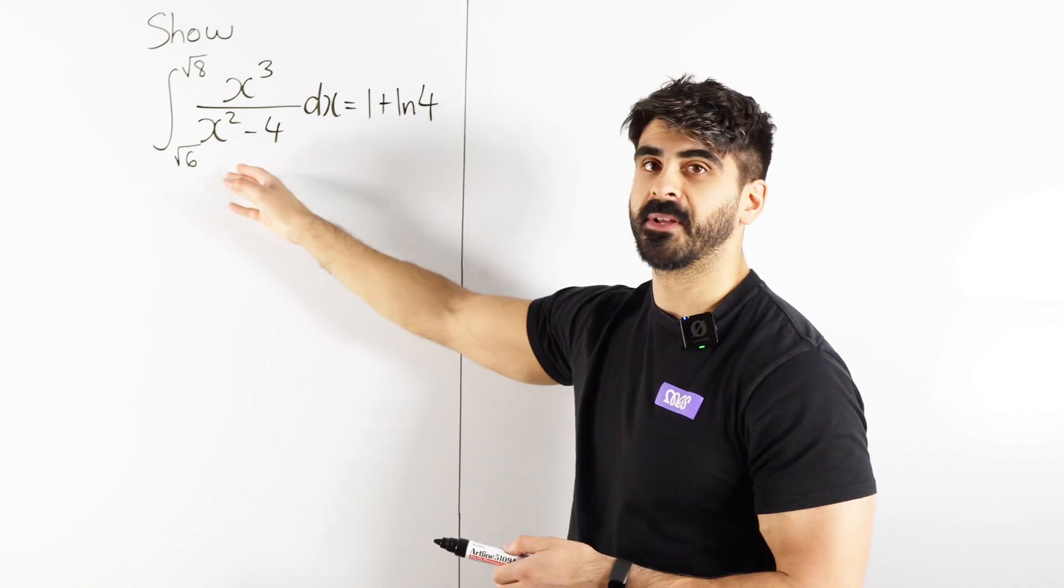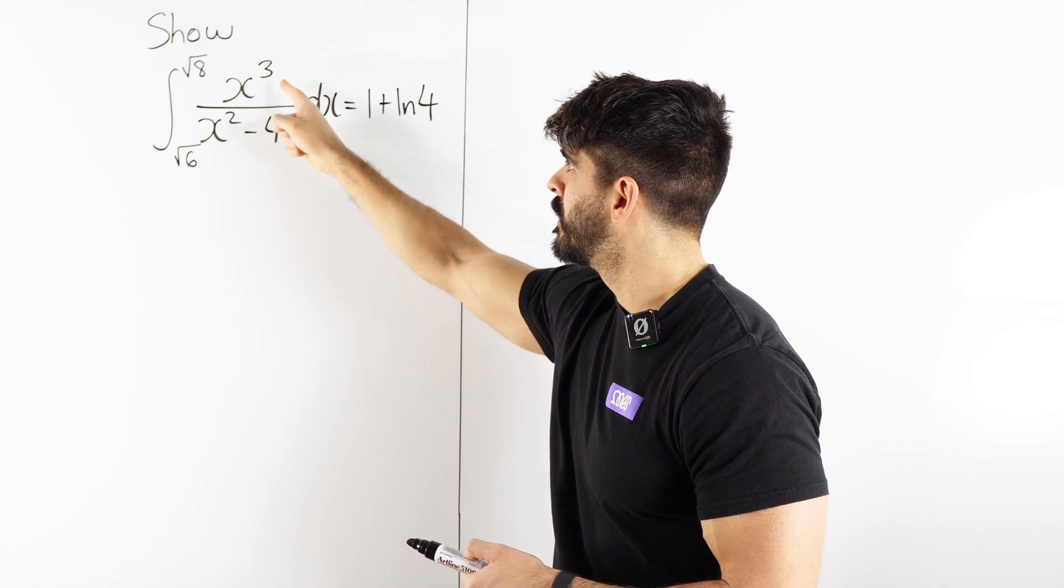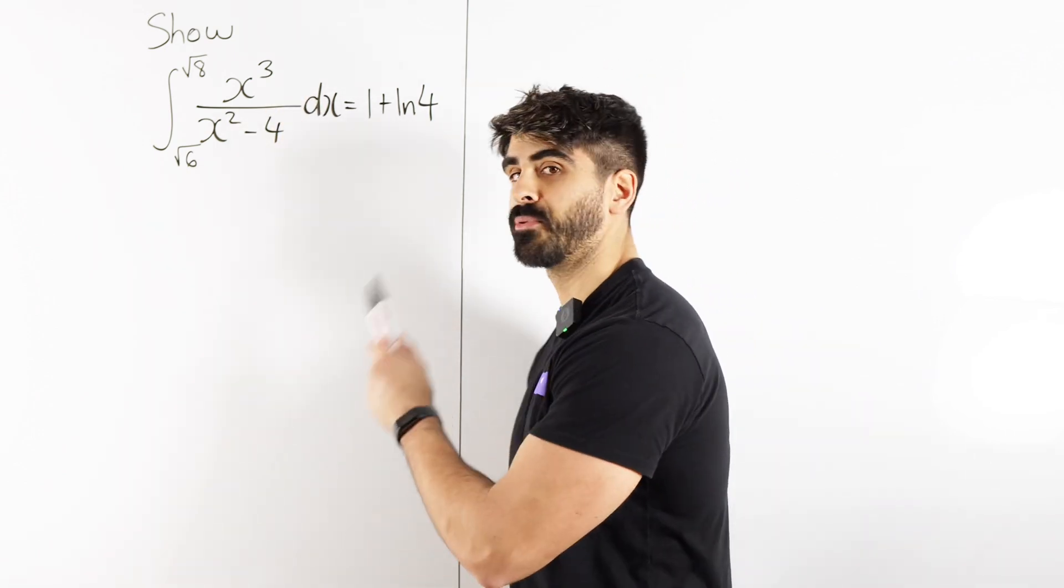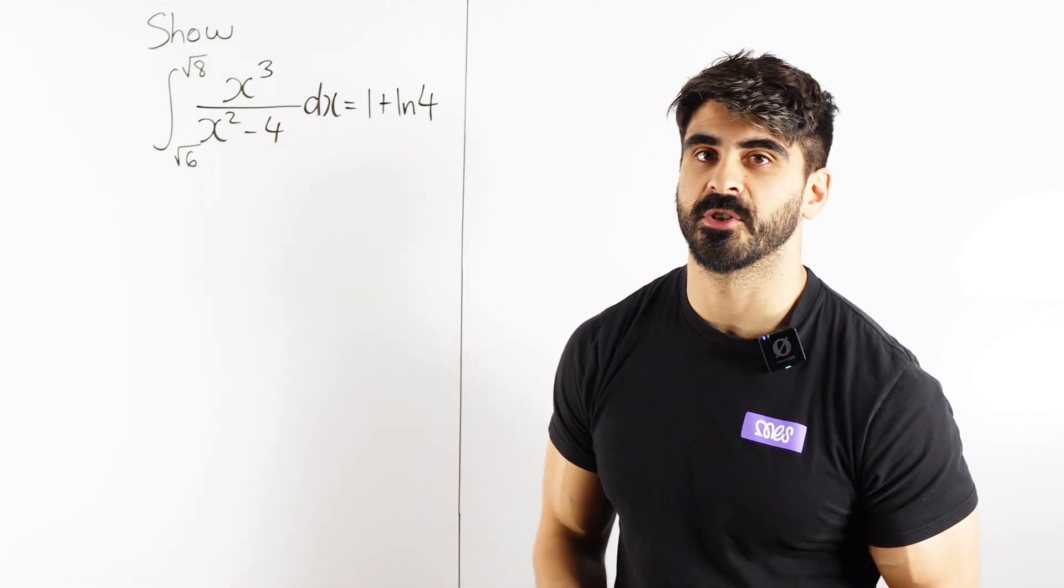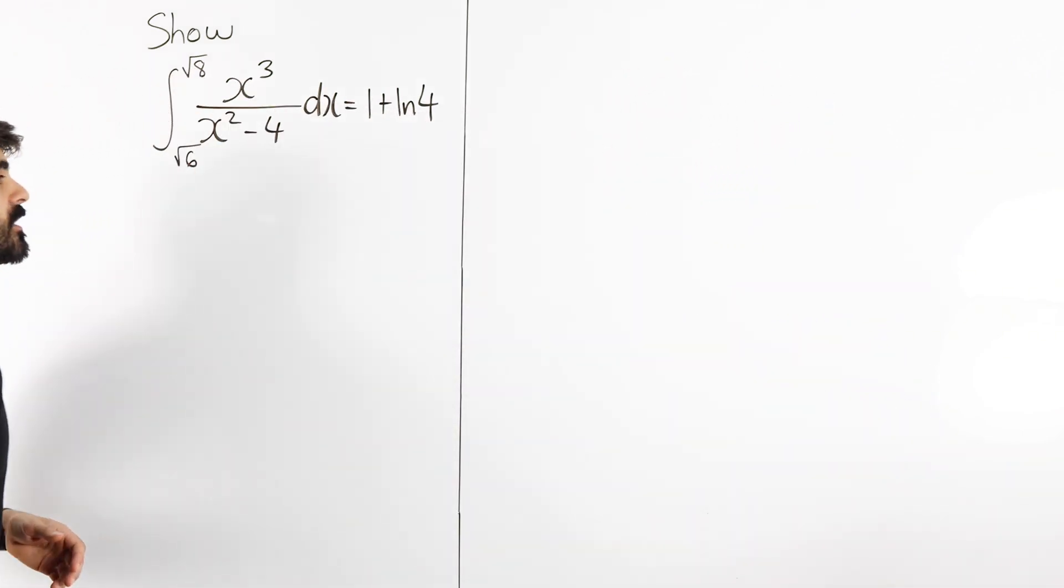We need to do some manipulation and this is going to be partial fractions. However, the power on the top is larger than the one on the bottom. This is an improper algebraic fraction. So we need to do long division first before we can do our partial fractions.